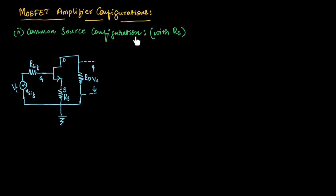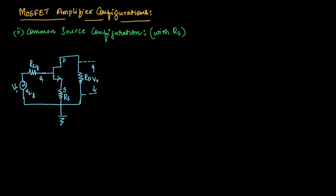Now let us understand common source configuration with resistance RS. This is the circuit for common source configuration with resistance RS connected across the source terminal. This circuit is similar to common source configuration; the only difference is we are connecting a resistor across the source terminal. Always remember: when connecting a resistor across the source terminal, you need to consider the hybrid T model to represent the circuit in the small signal equivalent model. If you don't connect any resistor across the source terminal, you need to consider the hybrid PI model. Since we are having a resistance across the source terminal, we will take the hybrid T model as the small signal equivalent model.